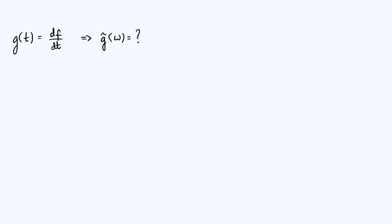Now to make things a bit more precise, what we have is a function g, it's a function of a parameter t which I'm going to think of as time. g is just the first time derivative of some other function f. The question is, how can we express the Fourier transform of g, which I'm writing as g tilde of omega, in terms of the Fourier transform of f.